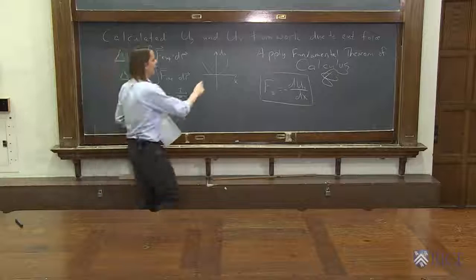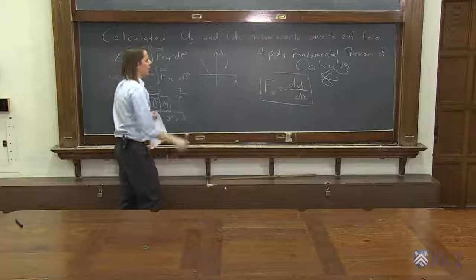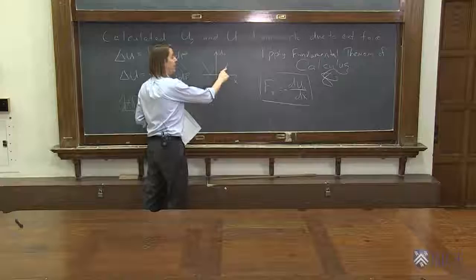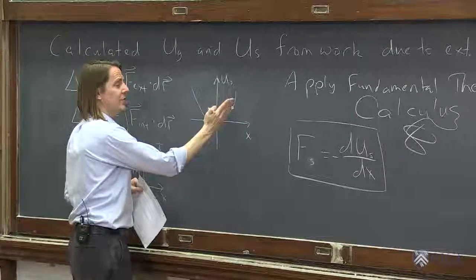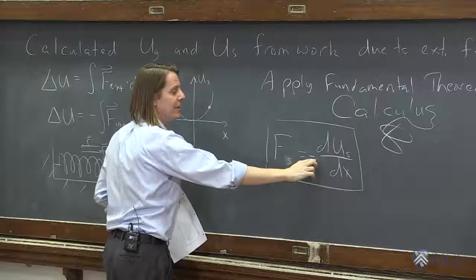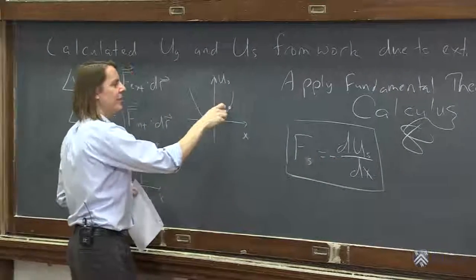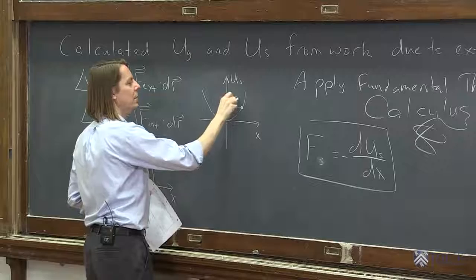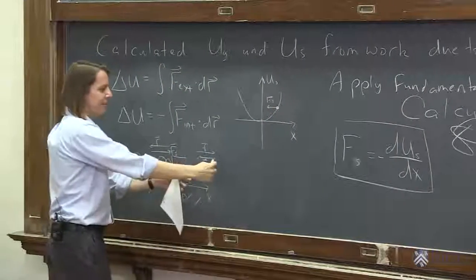And you can kind of see that this makes sense. All we've got to do is say, okay, what if we're right here, in this state? What is the slope dU/dx? It's positive. This says you take that slope positive, make it negative, and that's the direction of the force. So that means the force would be this way. And sure enough, pull the mass out, the force is that way.